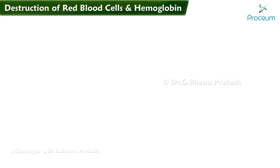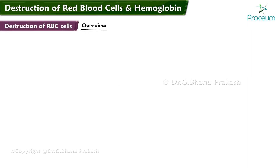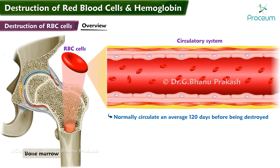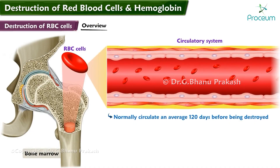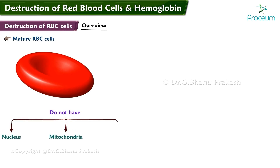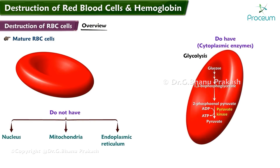Destruction of red blood cells and hemoglobin: when red blood cells are delivered from the bone marrow into the circulatory system, they normally circulate an average of 120 days before being destroyed. Even though mature red cells do not have a nucleus, mitochondria, or endoplasmic reticulum, they do have cytoplasmic enzymes that are capable of metabolizing glucose and forming